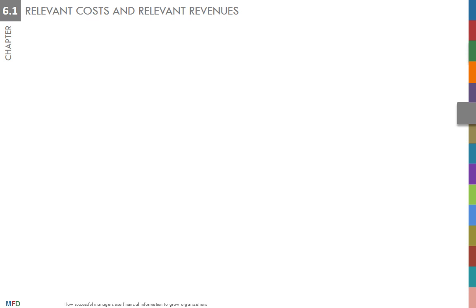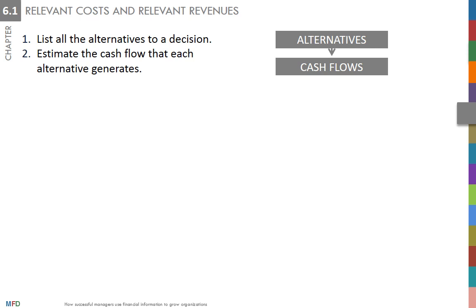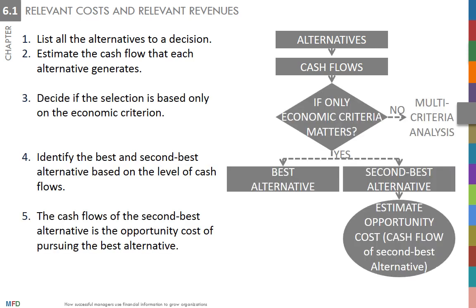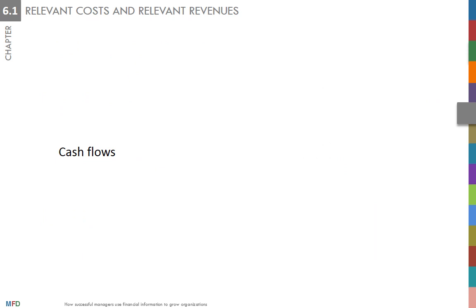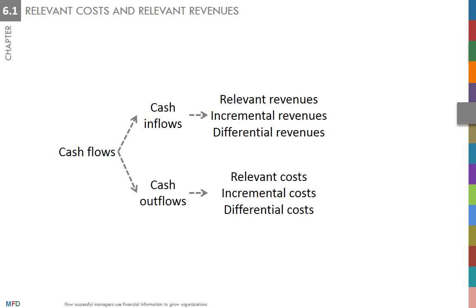Organizations are frequently confronted with decisions. In such situations, the concept of opportunity costs and the procedure outlined in the first chapter always holds true. To review: first, list all the possible alternatives; then determine the cash flow for each alternative. Finally, from an economic perspective, identify the alternative that generates the highest cash flows. The relevant cash outflows and inflows are called the relevant costs and relevant revenues.